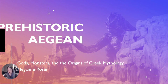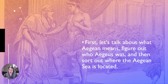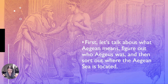The prehistoric Aegean is contemporaneous with most of the things we've been talking about so far, other than Paleolithic. Let's talk about what 'Aegean' means. Prehistoric means before writing or before history — so very old times before we have a written record of anything. Aegean is named after a figure named Aegeus.